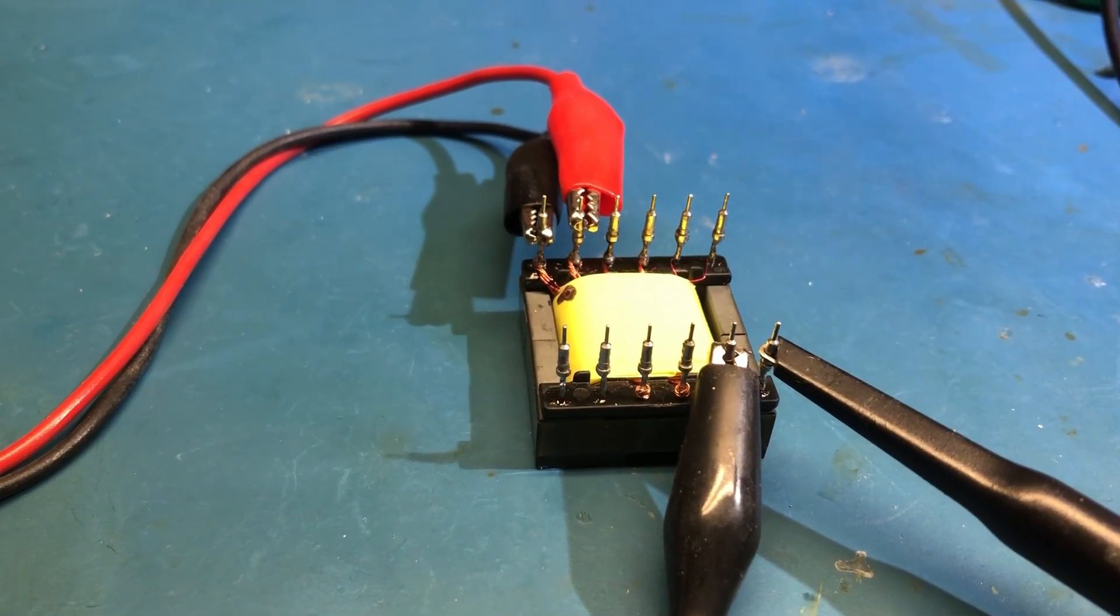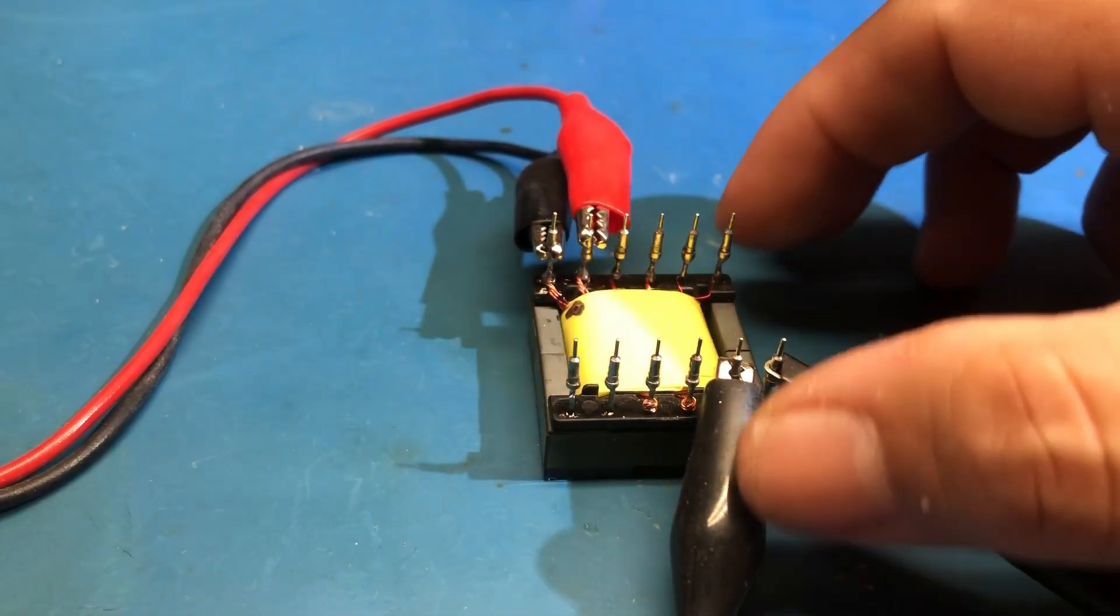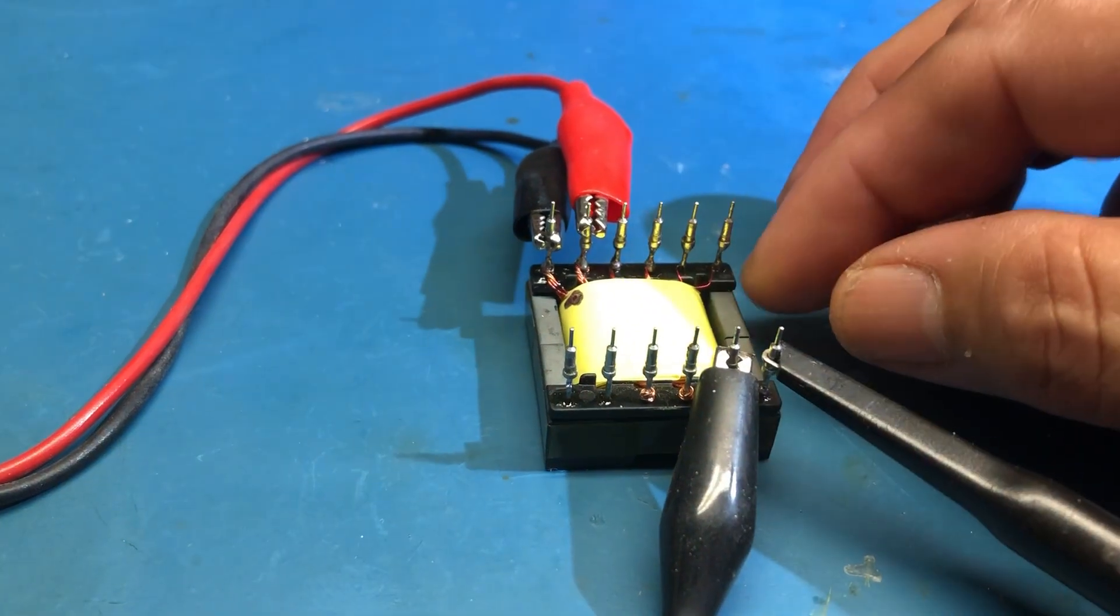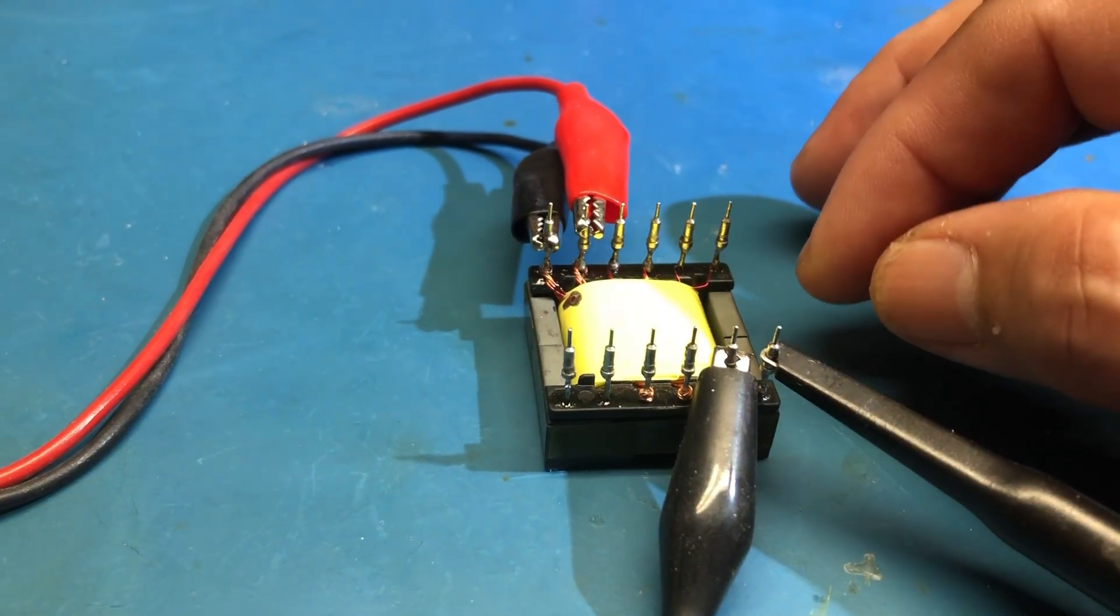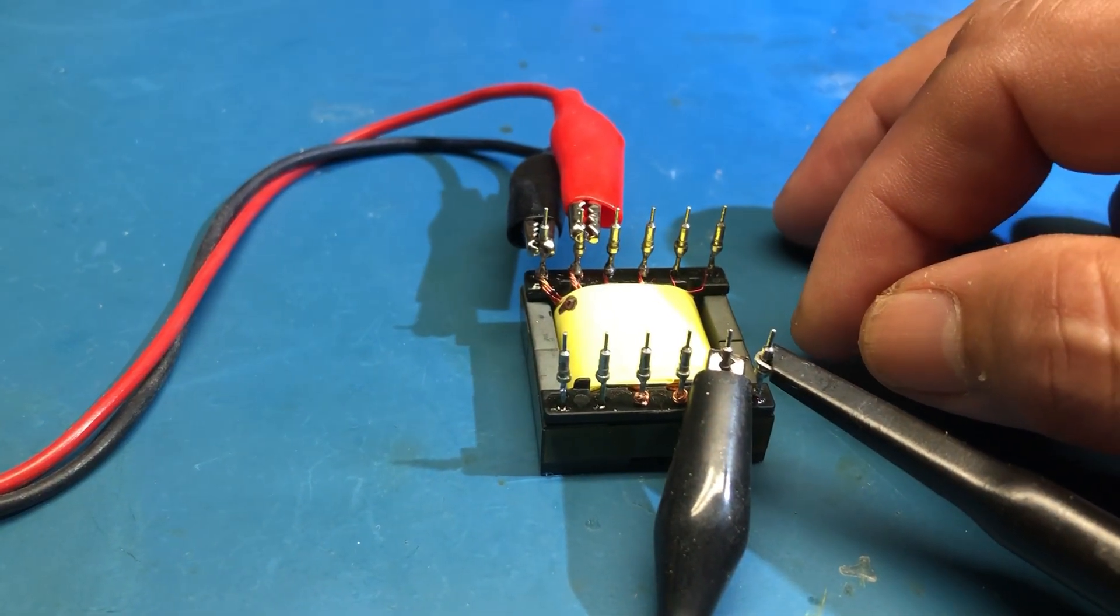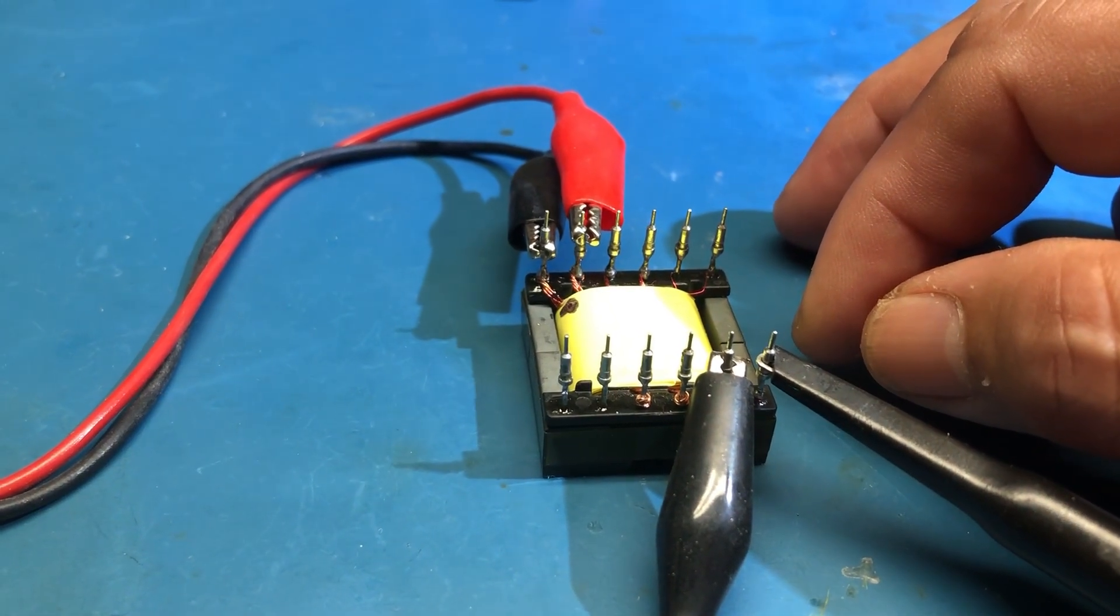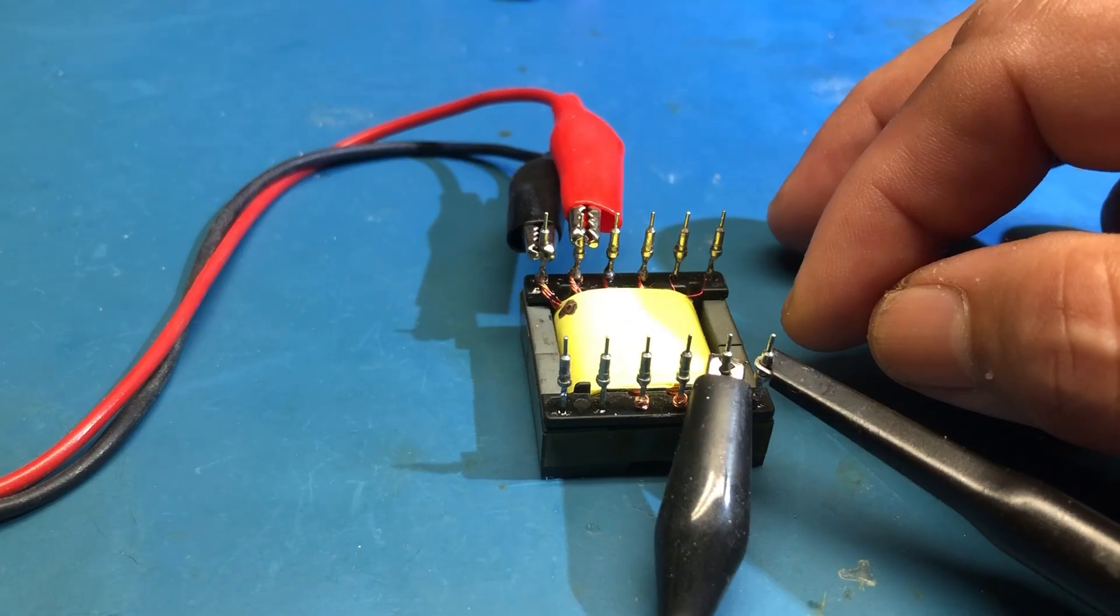Hello, this is Robert Palanias. Sometimes you get a transformer and sometimes you forget which is the dotted or the undotted side. Here's a method of checking the phase that way you can determine which is the dotted and so forth.